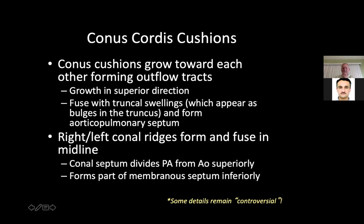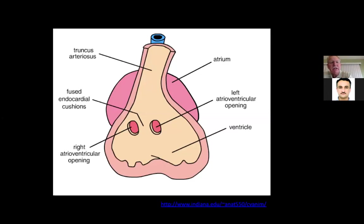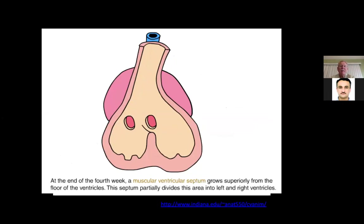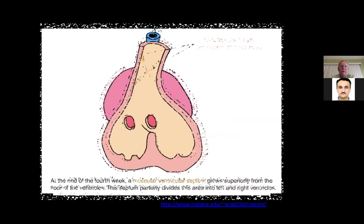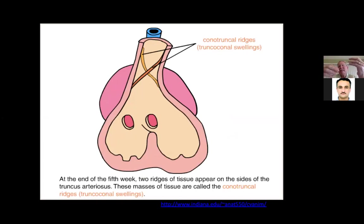Conal truncal septation: the truncus arteriosus is over both the opening to the right ventricle and the left ventricle opening. As it continues, we see a septation coming up to make two ventricles to separate the left from the right. These conal truncal ridges and swellings form, separating it both anterior-posterior and right and left.